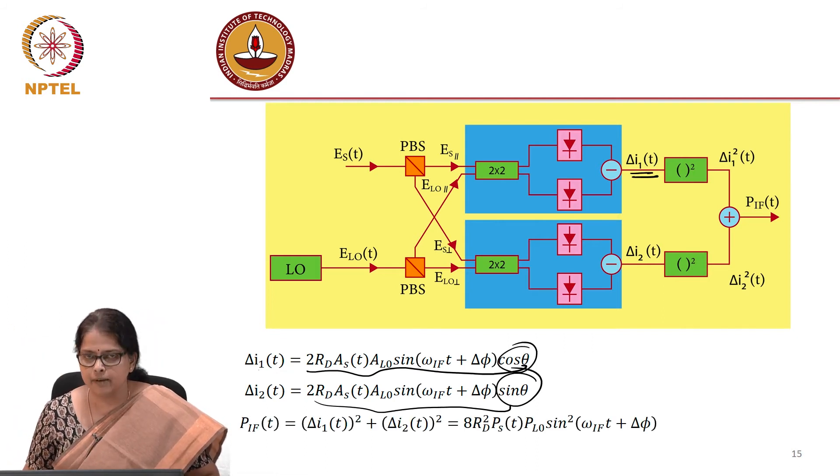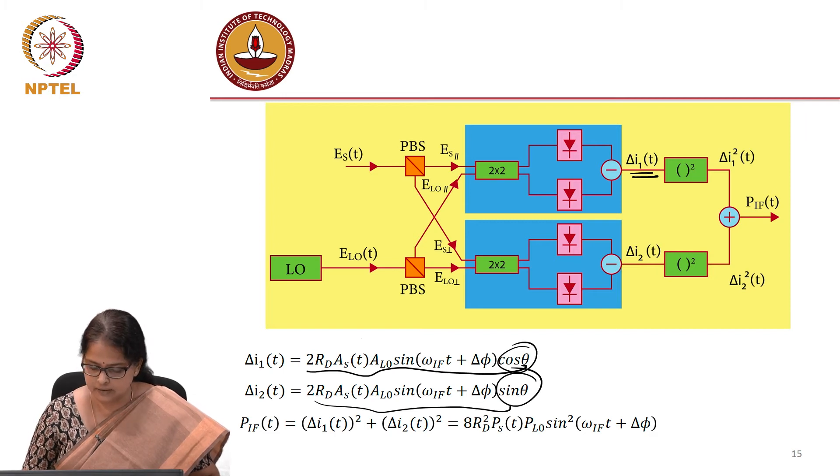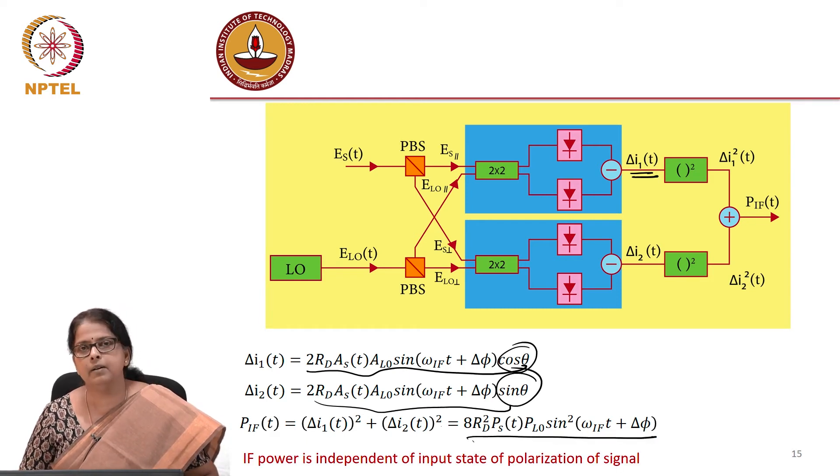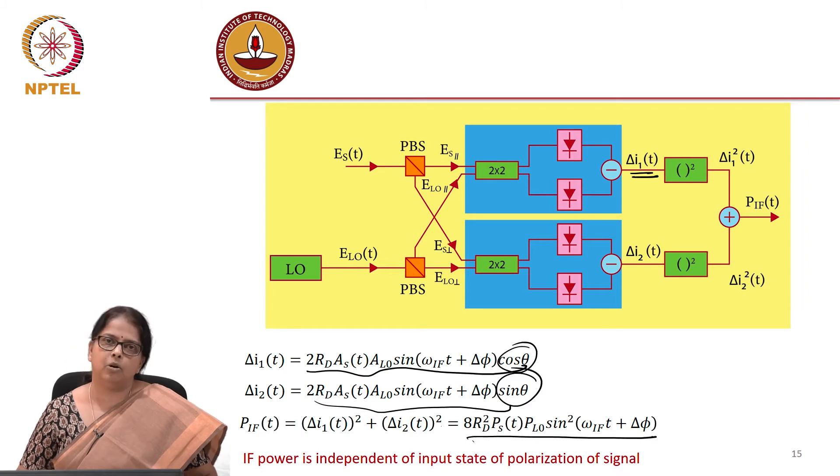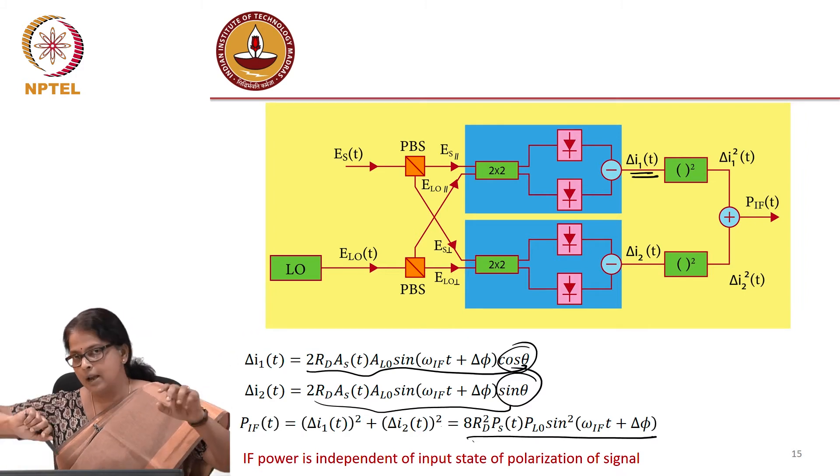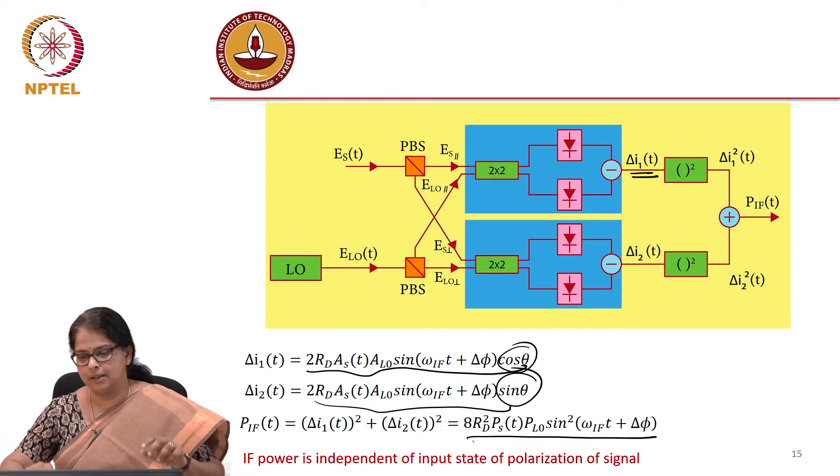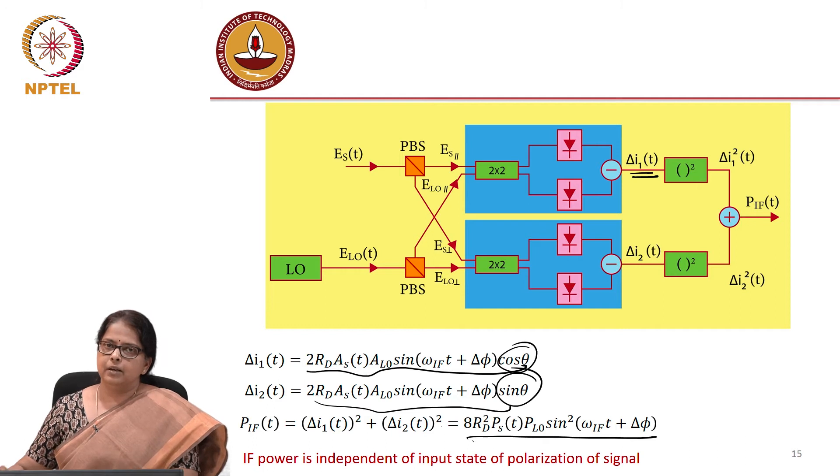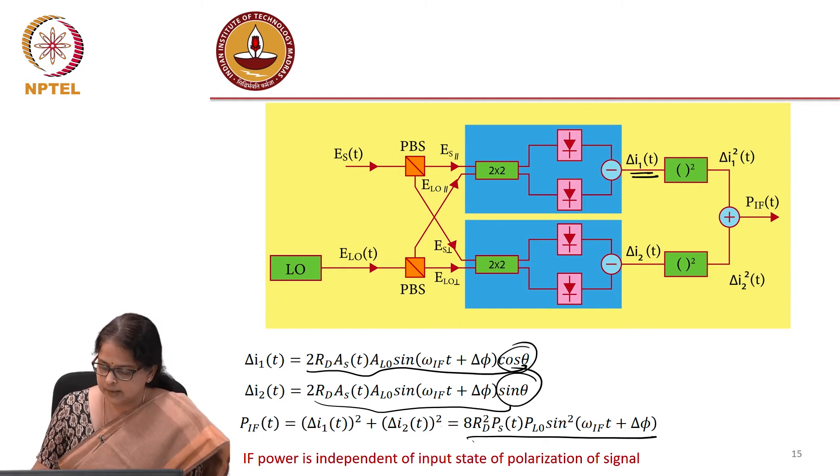So the total IF current is I1 square plus, you are basically doing a sum square here. You will get something like this and now this IF power is becoming independent of the input polarization. So you need not worry about aligning the polarization state of your local oscillator. You get your output independent of the state of polarization of the input.